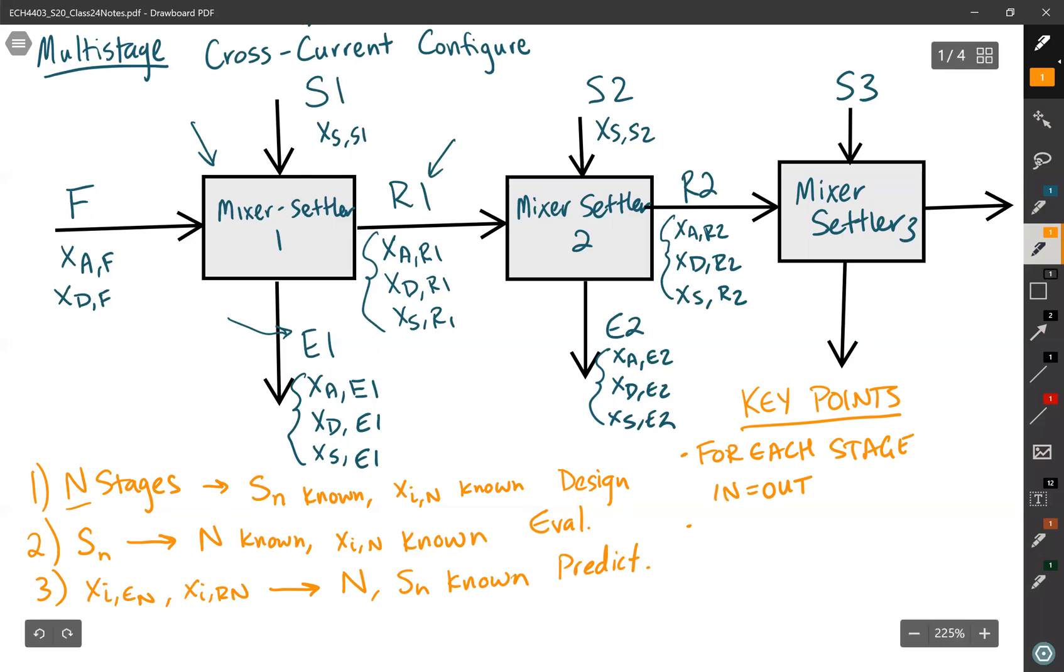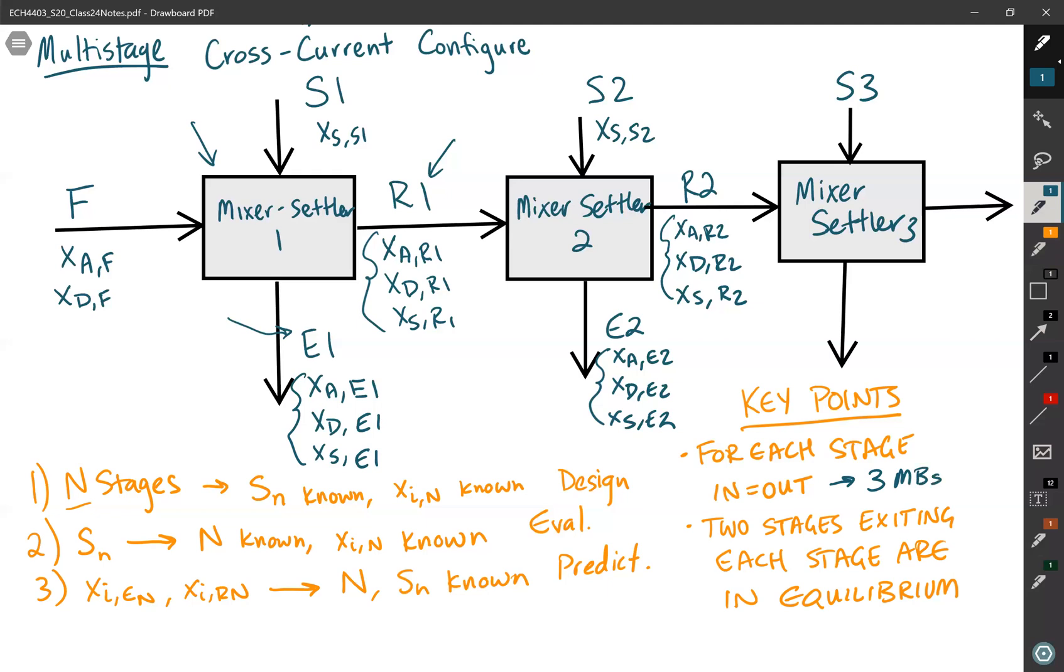The second thing is that anything that comes off of a stage, the two streams that come off of a stage, two stages exiting each stage are always in equilibrium. If you think about how many variables do I need to know in order to solve any of these, for each stage I said I have a material balance. On each stage I have three material balances that I could write for each stage, and that is because I have three components. Technically I have the overall material balance too, but remember that one is not independent.